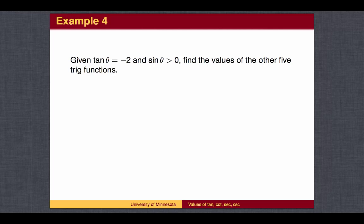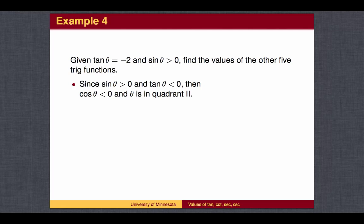If you are given the tangent value, use the geometric definition to find the sine and the cosine. In this example, the tangent of theta is negative 2. For the time being, let's ignore the negative sign and think of the tangent value as the fraction 2 over 1, which is how we will label the opposite and adjacent sides. We will then come back and figure out where to place negative signs. Since the sine value is positive and the tangent is negative, the cosine should also be negative, and the angle should be in the second quadrant. When we label our second quadrant angle, the opposite side should be length 2, the adjacent side should be length 1, and we should place a negative sign on the cosine value, which corresponds to the adjacent side.